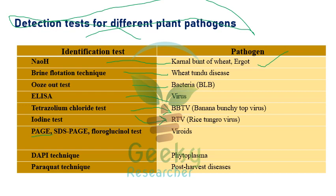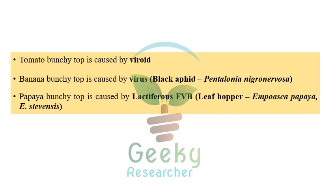DAPA technique is especially recommended for detection and identification of phytoplasmal diseases. Paraquat technique is generally recommended for post-harvest diseases. Summary: sodium hydroxide — kernel bunt/wheat; brain flotation — wheat tundu; Woos out — bacteria; ELISA — virus; tetrazolium chloride — banana bunchy top virus; iodine test — rice tungro virus; PAGE/SDS-PAGE — viroids; DAPA — phytoplasma; paraquat — post-harvest diseases.